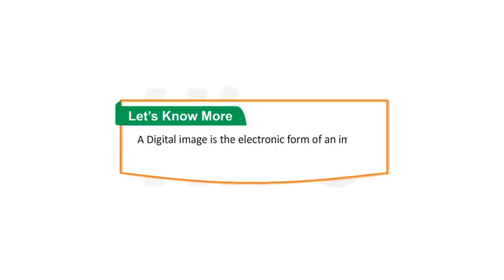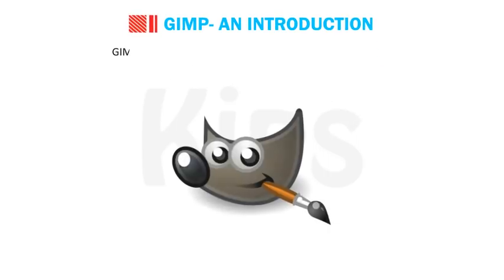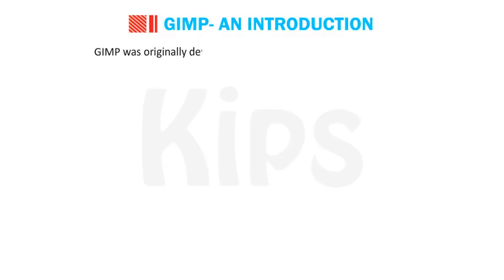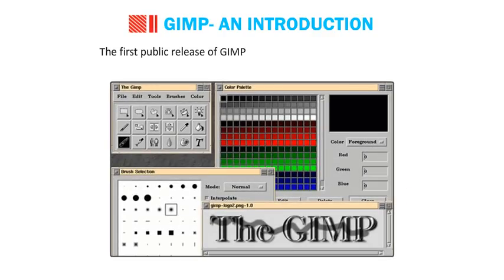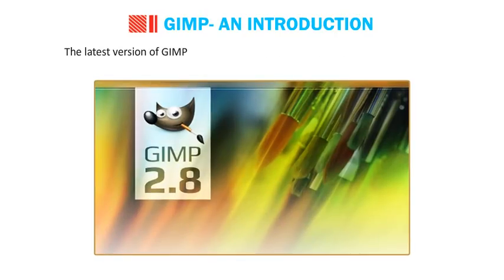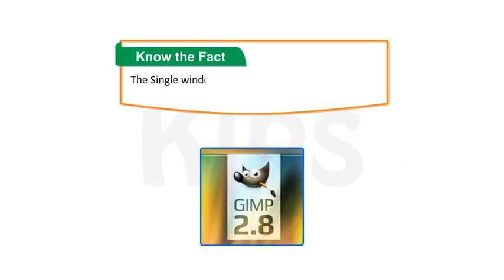A digital image is the electronic form of an image stored in a computer. It can be of two types: Raster Image and Vector Image. GIMP is an acronym for GNU Image Manipulation Program. GIMP was originally developed by Spencer Kimball and Peter Mattis. The first public release of GIMP 0.54 was made in January 1996, and it has been regularly updated ever since. The latest version of GIMP is 2.8.16, released on November 21, 2015. The single window mode of GIMP was introduced for the first time in GIMP 2.8.